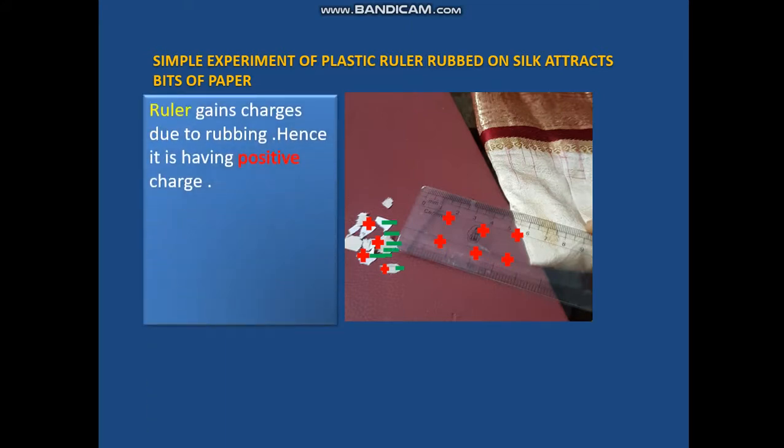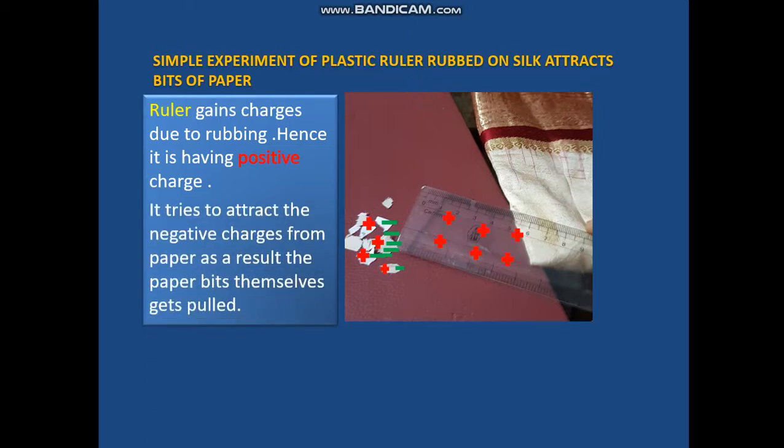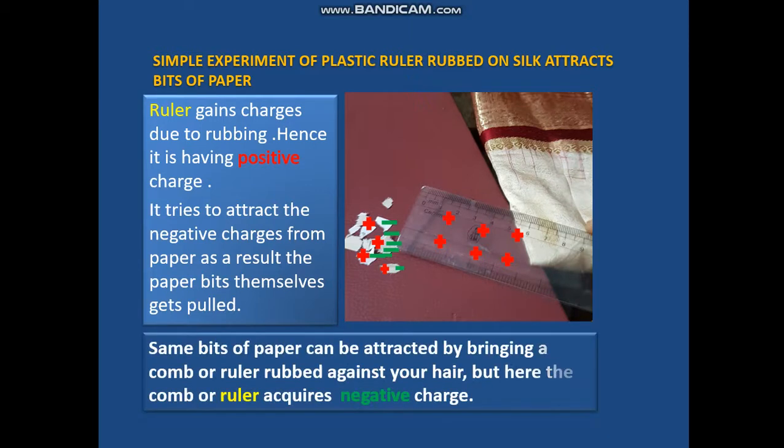The ruler gains charges due to rubbing. Hence it has a positive charge and tries to attract the negative charges from the paper. As a result, the paper bits themselves get pulled. We also have another example which is quite common.